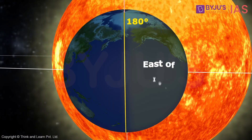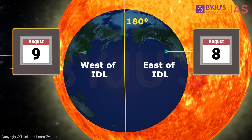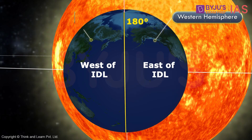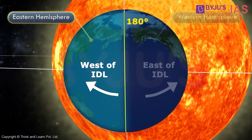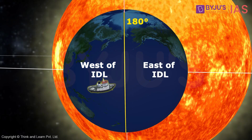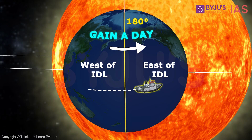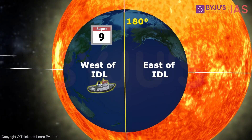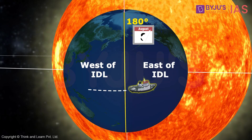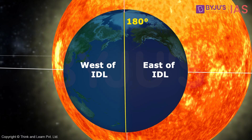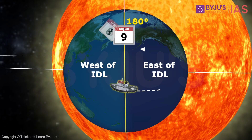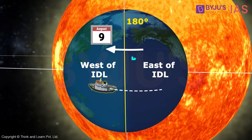Thus, we can see how on the east and west of the IDL there are two dates, and if someone crosses the IDL they would witness a change in the date. The western hemisphere is on the east of the IDL and the eastern hemisphere is on the west of the IDL. If you move from the west of the IDL to the east, you gain a date — meaning if your current date is 9th August, crossing to the east makes it 8th August. On the other hand, crossing the IDL from east to west, you would lose a date.